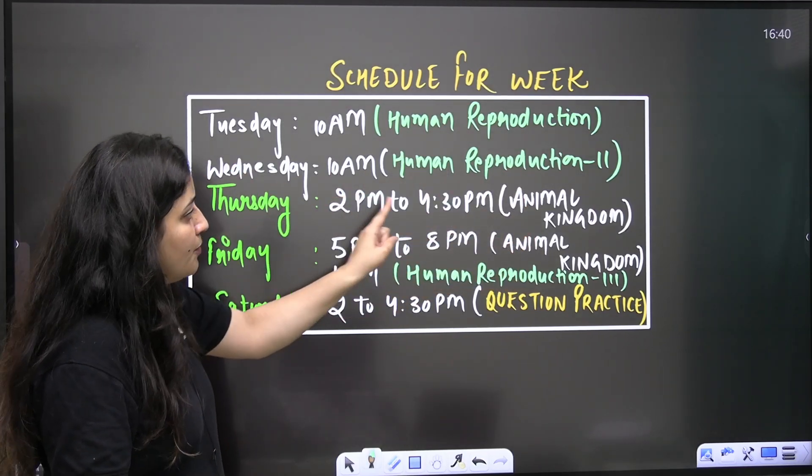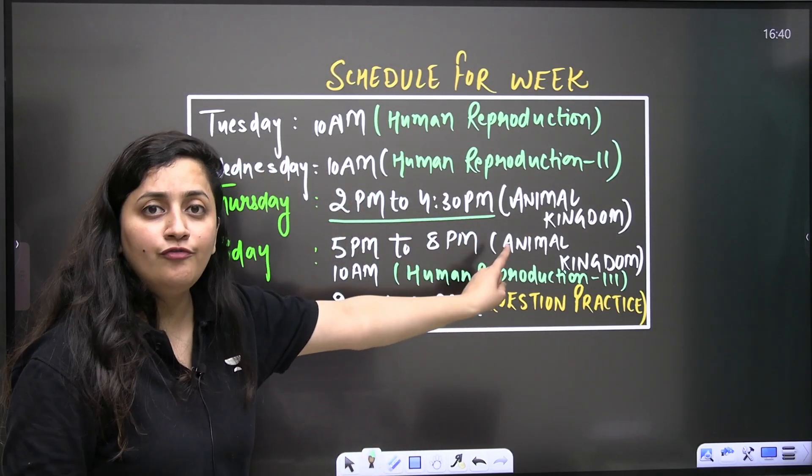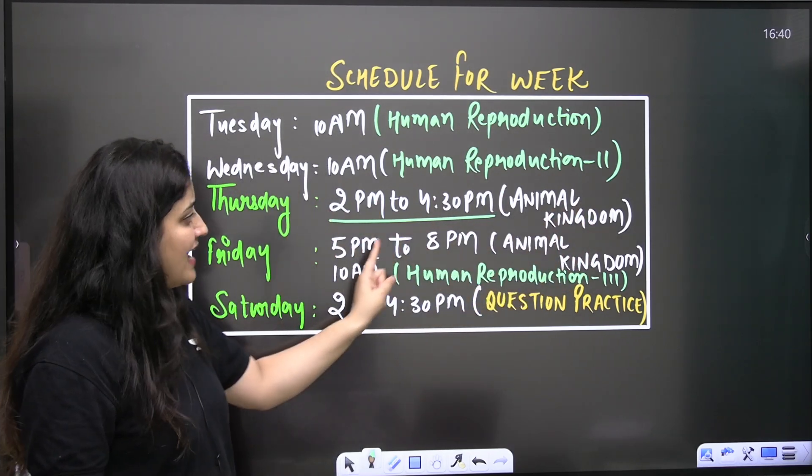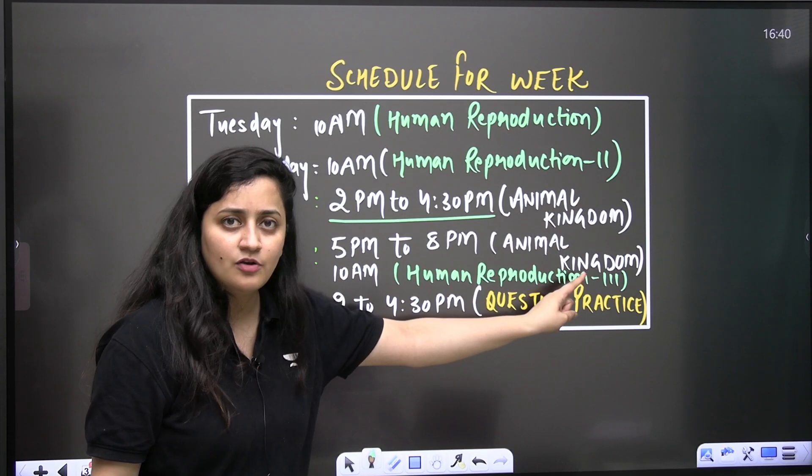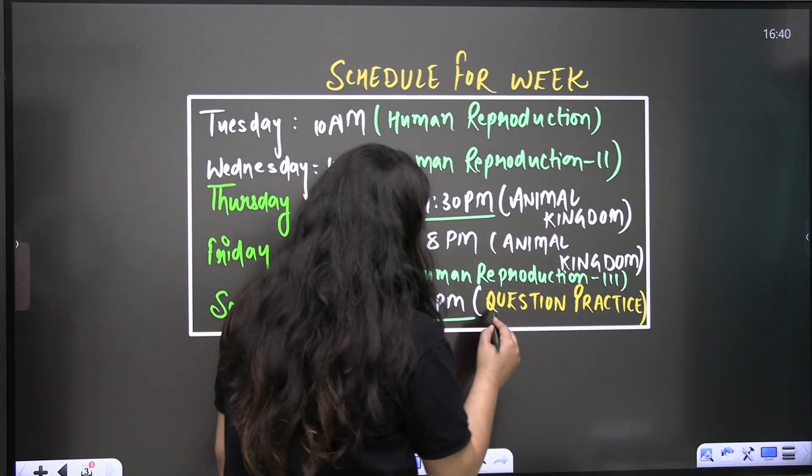Please take a screenshot of it. 2 p.m. to 4:30 p.m. Your detailed marathon of animal kingdom will be there. Friday, 5 p.m. to 8 p.m. Again, the detailed marathon of animal kingdom will be there. And then Saturday, 2 to 4:30 p.m. there will be the question practice.